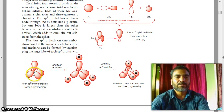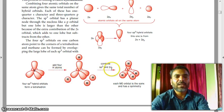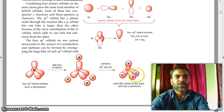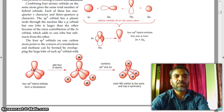You see here, 1, 2, 3, 4 just like this. Four SP3 hybrid orbitals form a tetrahedron. Add four hydrogen atoms like this and combine SP3 and 1S. SP3 is this one and 1S is this. Each molecular orbital is the same and has sigma symmetry.